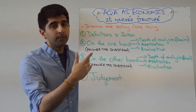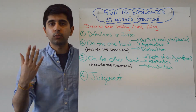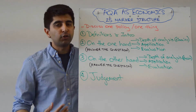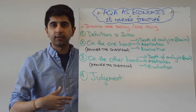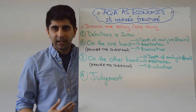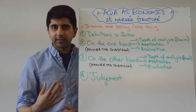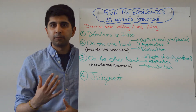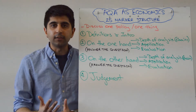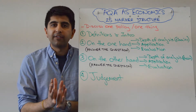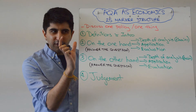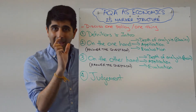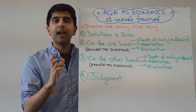But it could just be one policy — discuss whether a fall in interest rates will always increase economic growth, discuss whether indirect taxation is the best way of reducing consumption of sugary drinks. Whatever it is, you've got one thing that you need to focus on in your 25-marker and to discuss.